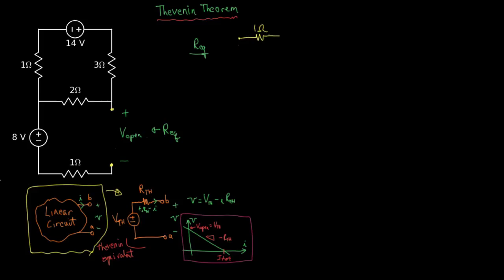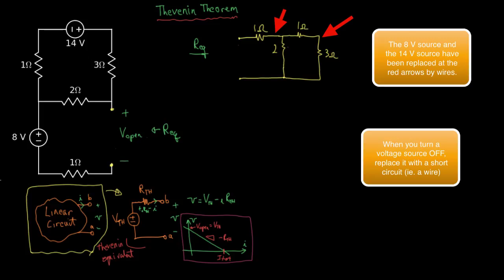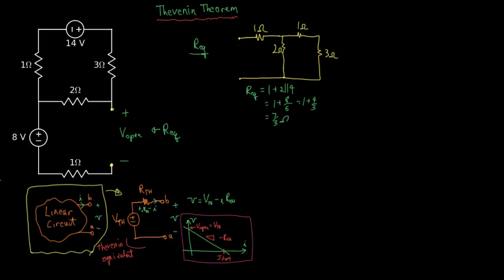Here's our network. We have the one ohm resistor on one side, and on the other side we have a branch, the two ohm resistor in the middle, one ohm and three ohm. So the equivalent resistance is going to be one plus two in parallel with four, one plus eight sixths, which is one plus four thirds, so that's seven thirds of an ohm.